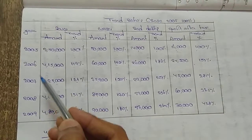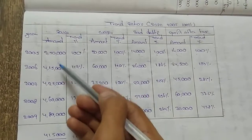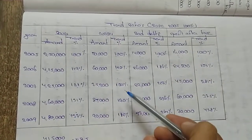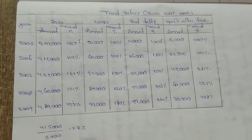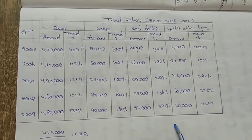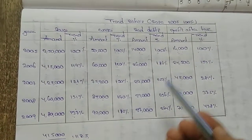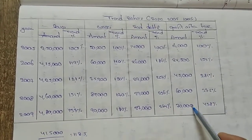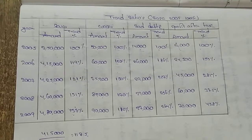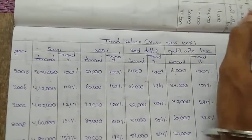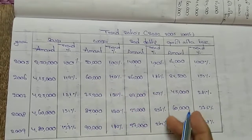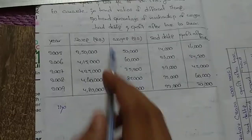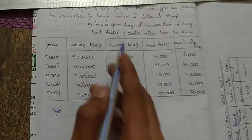Summarizing years 2005 through 2009: sales trend values are compiled — 3,50,000; 4,15,000; 4,25,000; and so on. The trend ratio table is now complete. Next, we move to trend percentages, which show the relationship of wages, bad debts, and profit after tax to sales.